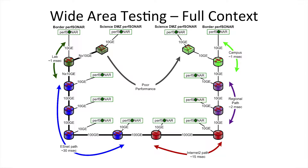We go to the PERFSONAR lookup service and generate a diagram, and now we look and say: how can we use the PERFSONAR hosts that are already deployed to map out which portions of the path are performing well and which portions of the path are performing poorly?